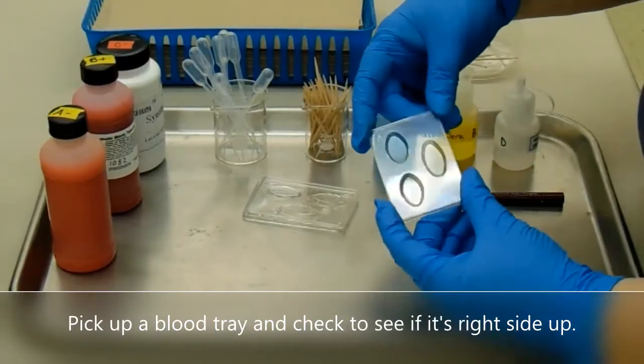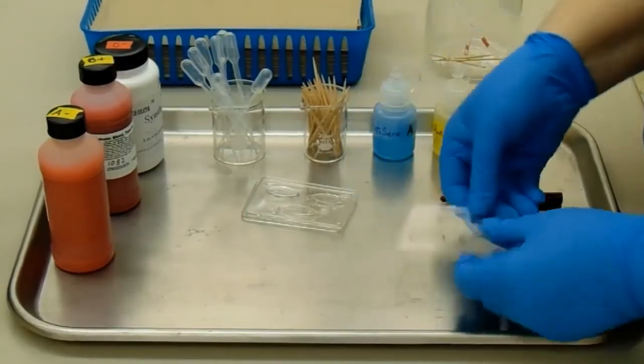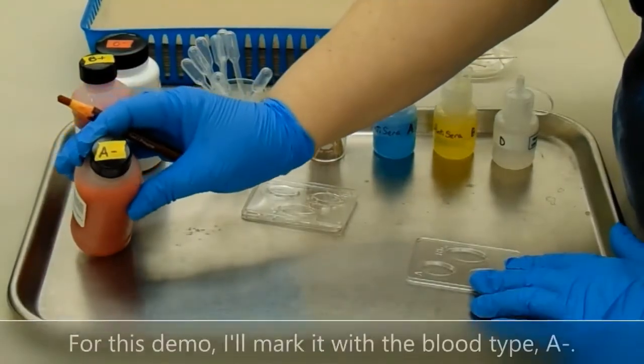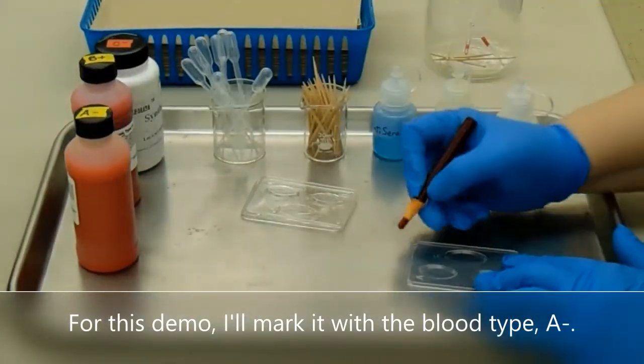Pick up a blood tray and check to see that it's right side up. Use the wax pencil to mark the tray. For this demo, I'll mark it with the blood type A negative.